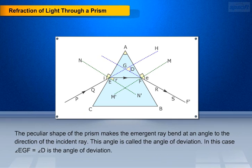The peculiar shape of the prism makes the emergent ray bend at an angle to the direction of the incident ray. This angle is called the angle of deviation. In this case angle EGF equals angle D, is the angle of deviation.